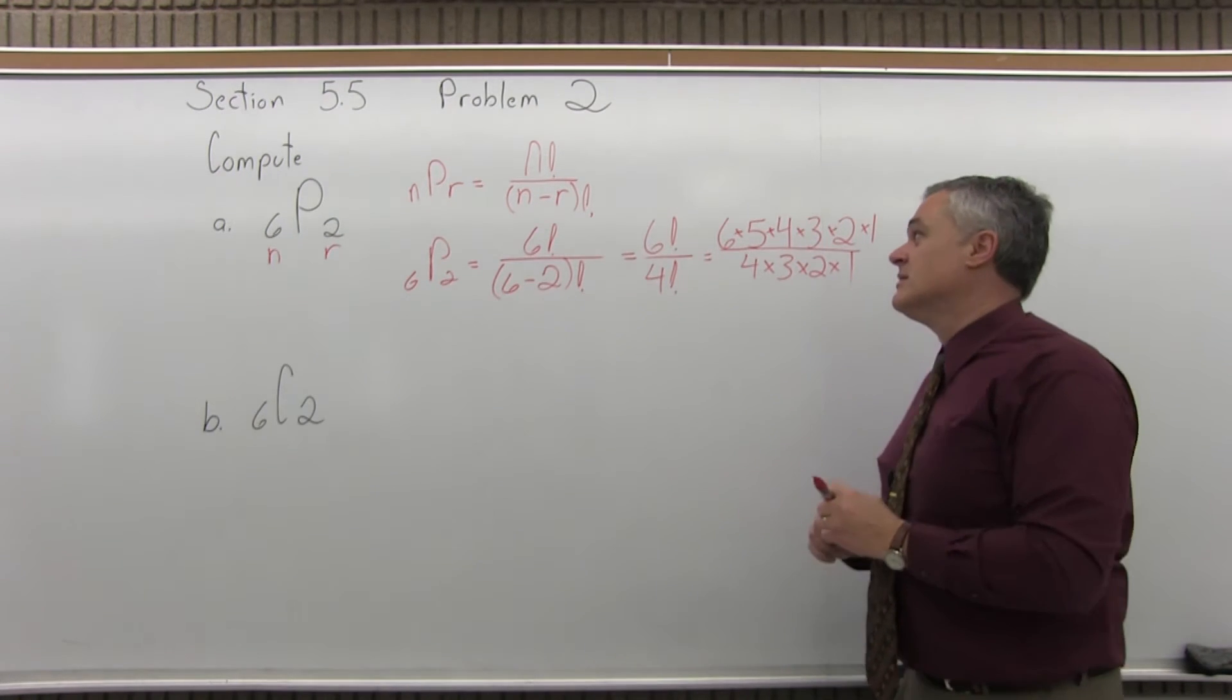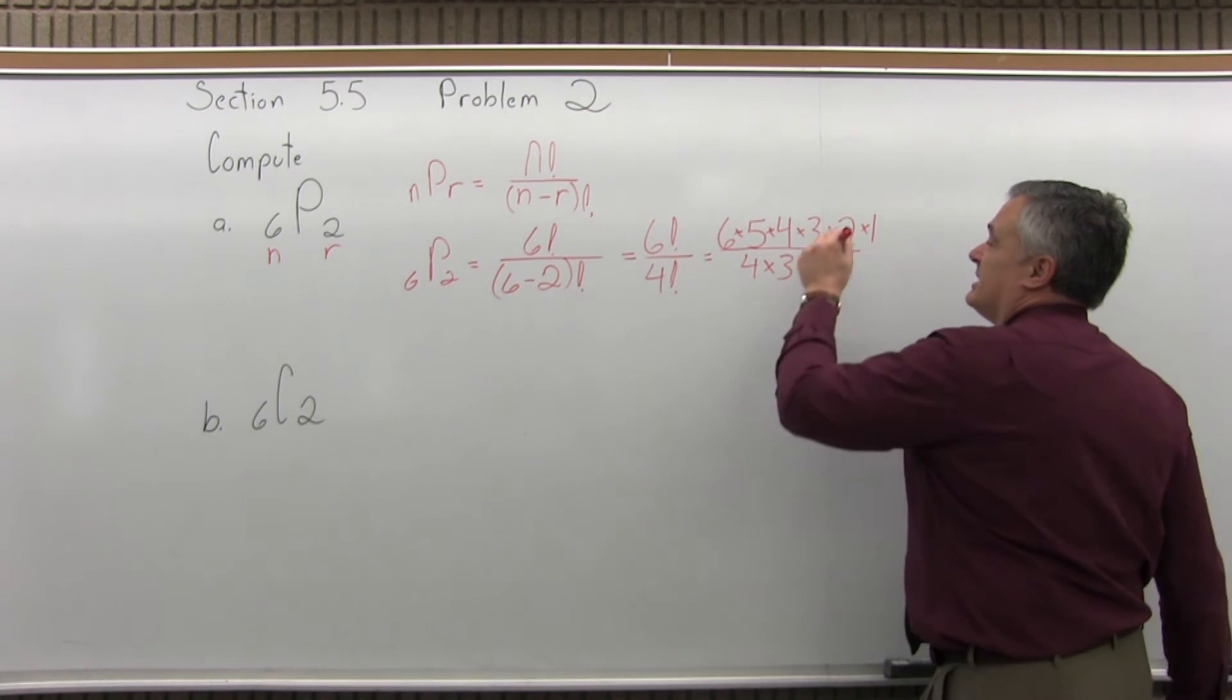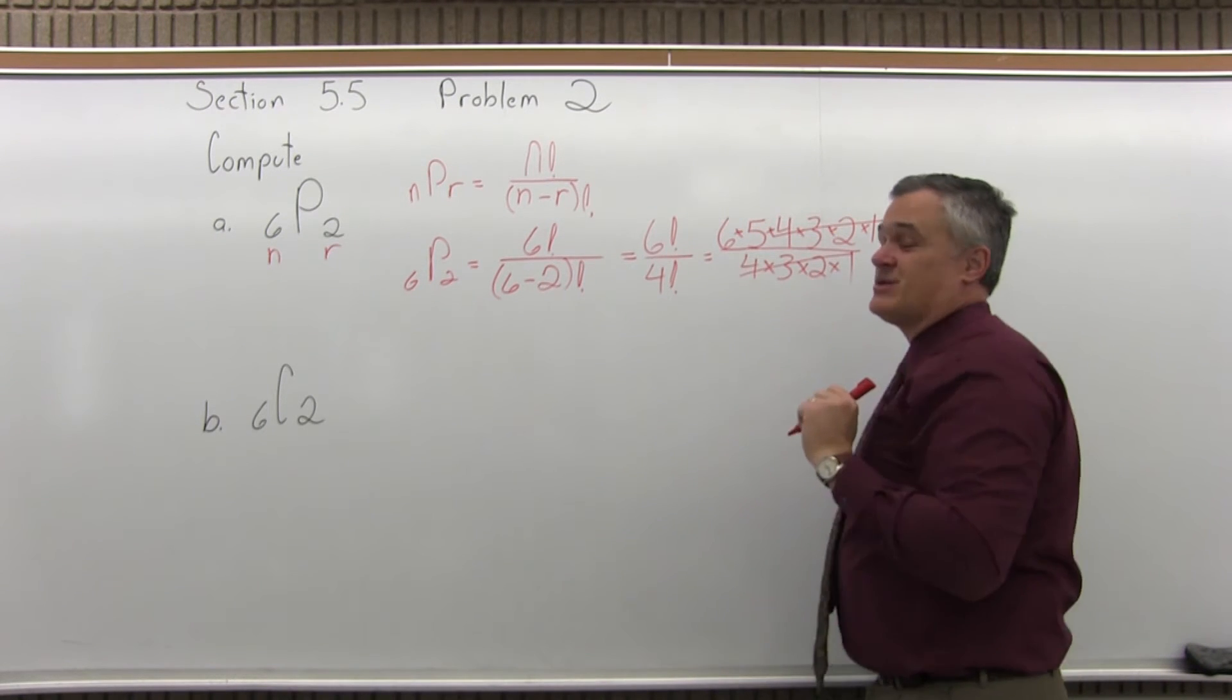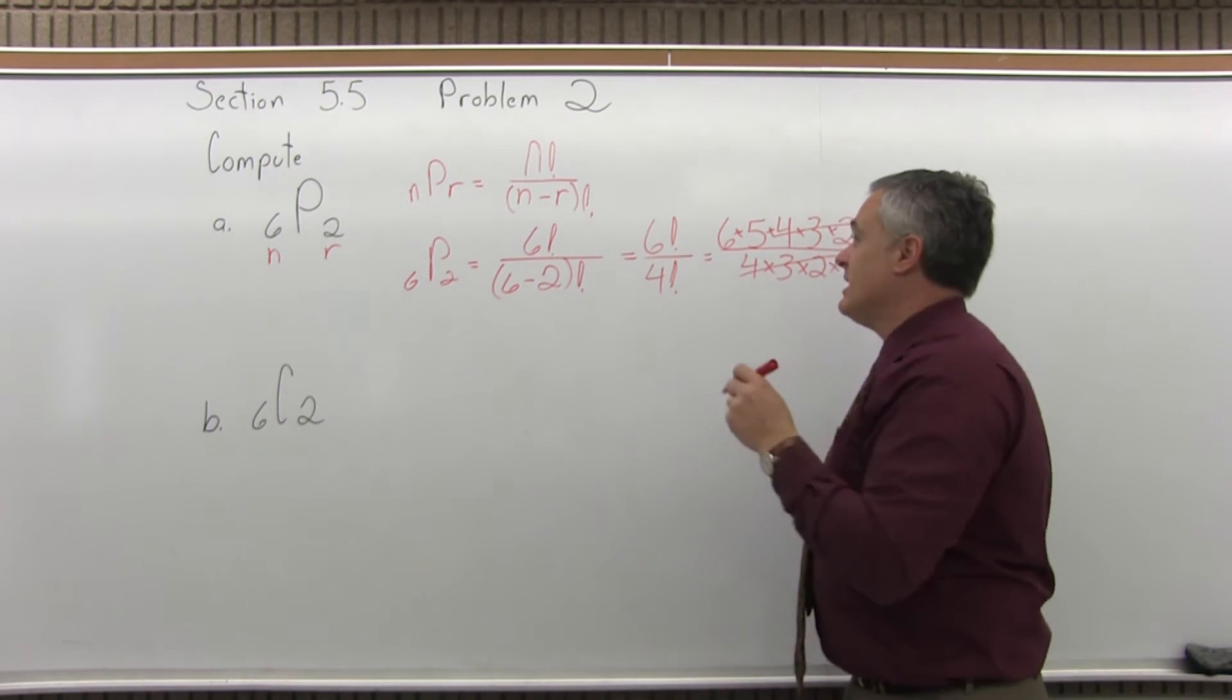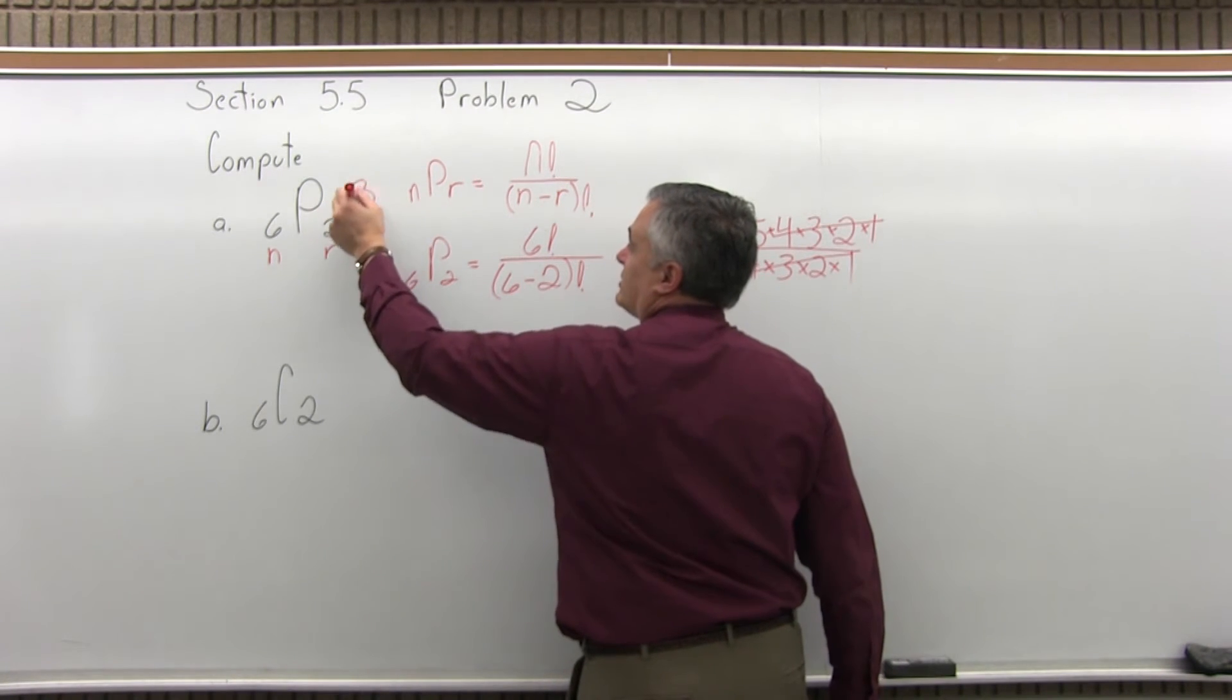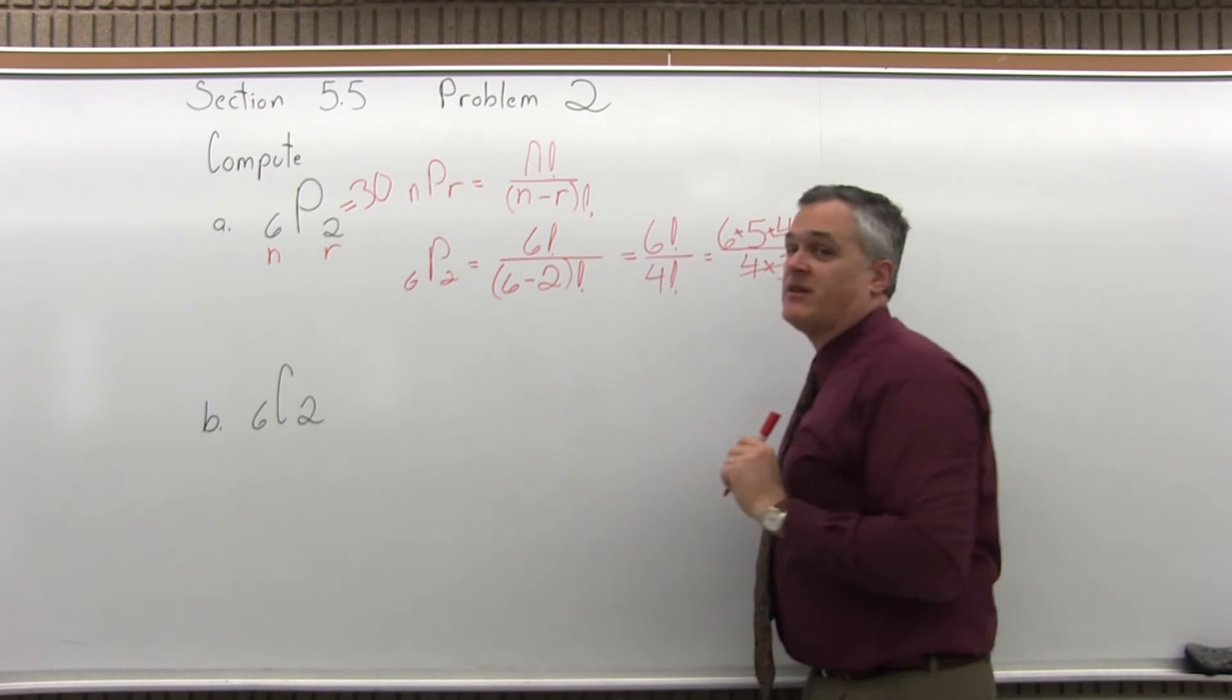And now you can multiply out the top, multiply out the bottom, and reduce it. But it's a little easier if you notice 4 times 3 times 2 times 1 on the top, 4 times 3 times 2 times 1 on the bottom. You're left with 6 times 5. So the final answer for 6 permutation 2 is 30.